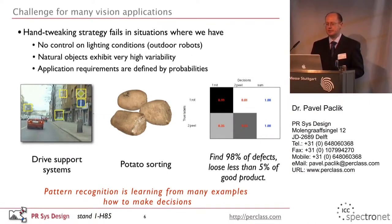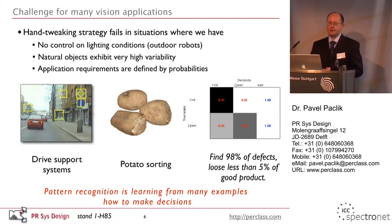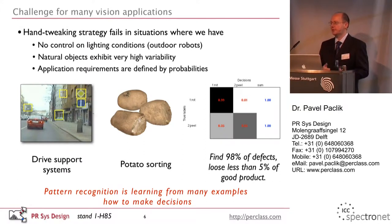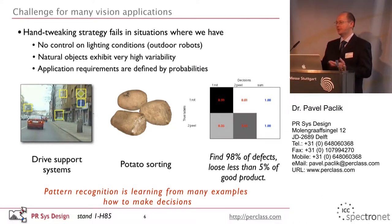Examples where hand-tweaking fails include anything with uncontrolled lighting — outdoors, service robots in homes, intelligent cars, agriculture — where lighting cannot be controlled well. Another big group is applications involving natural objects with very high variability: so many types of defects, so many varieties of potatoes, that there is no single good feature. A third group is where performance requirements are defined in terms of probabilities, which you cannot determine from just one or a few images — you need large sets of observations.